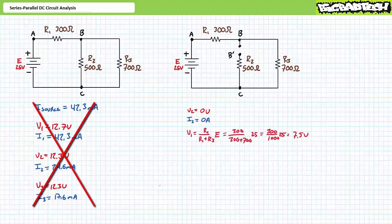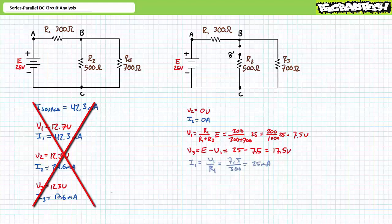No current flows through R2 and no voltage will be dropped across it. An application of the voltage divider rule demonstrates that V1 will be 7.5 volts. An algebraic rearrangement of the Kirchhoff's voltage law equation for this now-series circuit demonstrates that V3 will be the remaining 17.5 volts. An application of Ohm's law demonstrates that I1 will be 25 milliamps. Given this is now a series circuit, source current and I3 will also equal 25 milliamps. The opening of R2 has fundamentally changed the nature of the series-parallel circuit — all previous analysis is invalid.